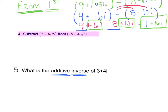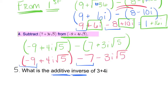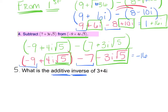One more adding and subtracting example. It says subtract blank from blank, so remember: from comes first. After rewriting, can we break down the square root of 5? No — its only factors are 5 and 1, so it stays. Distribute the negative to get minus 7 minus 3i times the square root of 5. Combining like terms: negative 9 and negative 7 give negative 16. Then 4i root 5 and negative 3i root 5 are like terms, giving 1i root 5, which we write simply as i root 5.